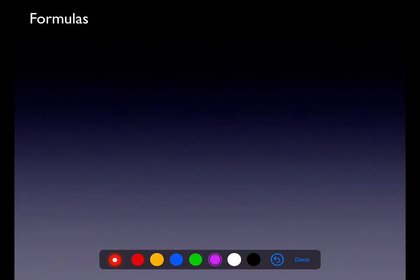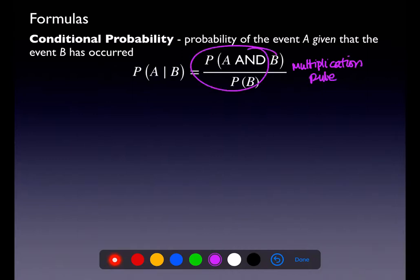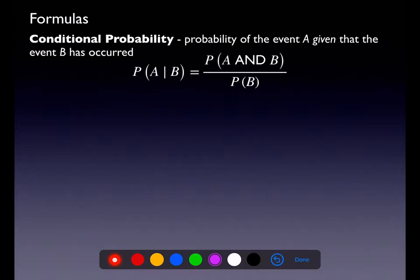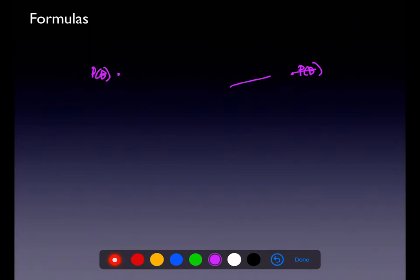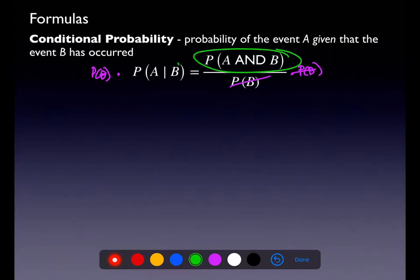There's the conditional probability rule, also frequently called the multiplication rule. You might think: why is it called the multiplication rule if I see division? If you were to multiply both sides by P(B), the P(B) terms would cancel out and you'd get that P(A and B) is a product — that's why it's called the multiplication rule. It's just written in a different format.